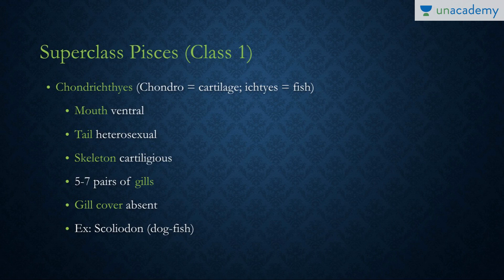There are two classes of Pisces. Class one is Chondrichthyes — 'chondro' means cartilage and 'ichthyes' means fishes. In these fishes the mouth is on the ventral position and the tail is heterocercal, meaning the superior and inferior parts of the tail are different in shape. The skeleton is cartilaginous, they have five to seven pairs of gills, and the operculum is absent. Example: Scoliodon, or dogfish.